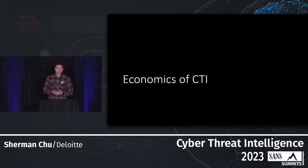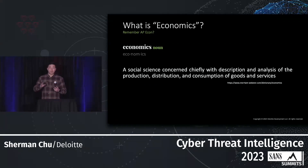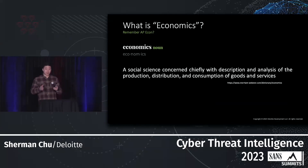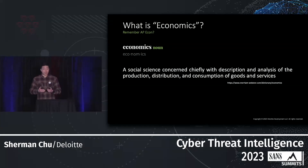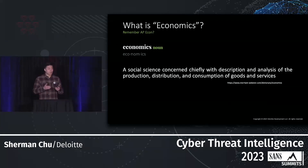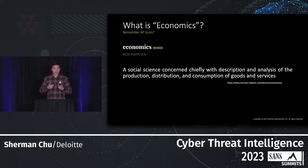Let's start with economics. We've all taken classes — high school, college, AP econ, micro and macro. I can promise you there are no Pareto optimal charts here. We're talking about the basic principles and fundamentals of economics. As a quick refresher, according to Merriam-Webster, economics is a social science concerned with the description and analysis of production, distribution, and consumption of goods and services. Now how do we apply that to CTI?